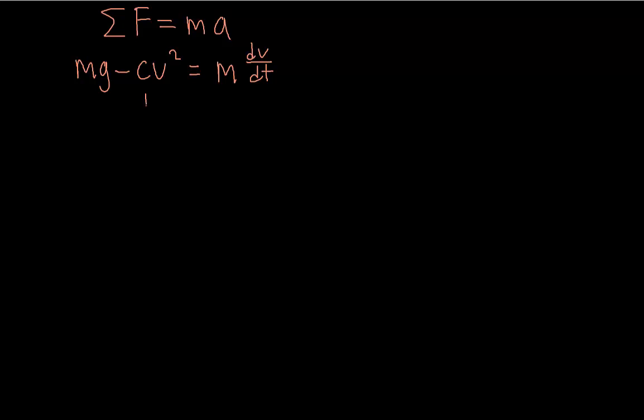So again, this is a differential equation. And so we're going to divide by the mass. And then next, what we're going to do is factor out the g. And you'll see the reason for this soon.